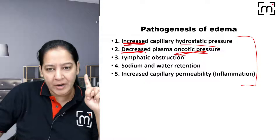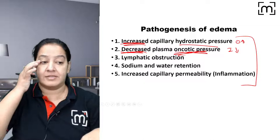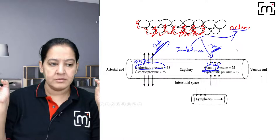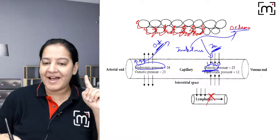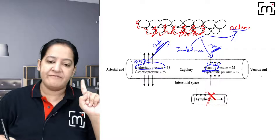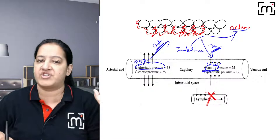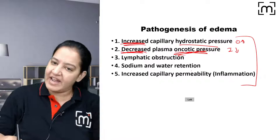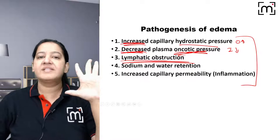The third cause is lymphatic obstruction — the backup is obstructed. The lymphatics are not working, are destroyed, removed, or non-functional. Due to any reason, if lymphatics are obstructed, even a small fluid imbalance that normally would be handled can result in edema. So we have understood three reasons out of five.